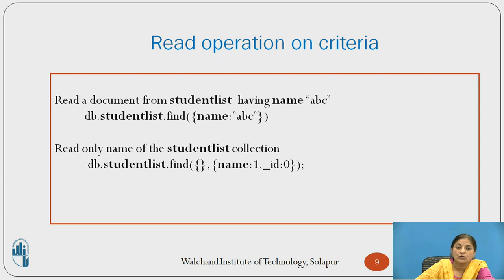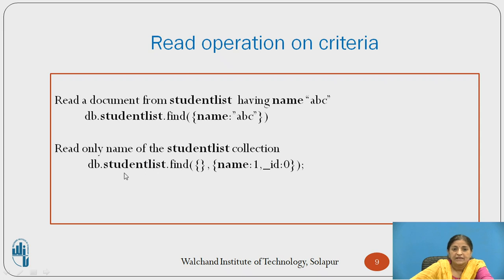To read a specific document from student_list having name 'ABC', use db.studentlist.find({name: 'ABC'}). To read only the name field and not role numbers, use db.studentlist.find({}, {name: 1, _id: 0}). In this way, only the names from the student_list collection will be listed.